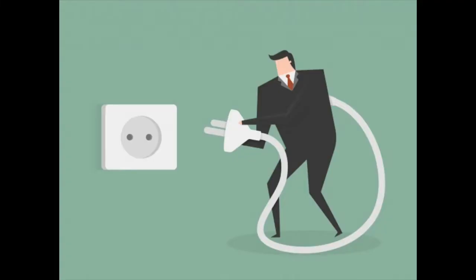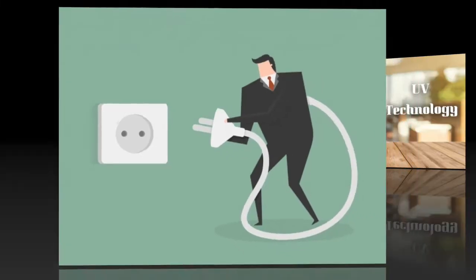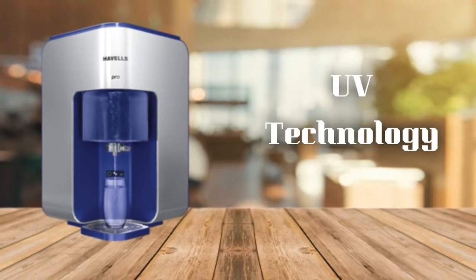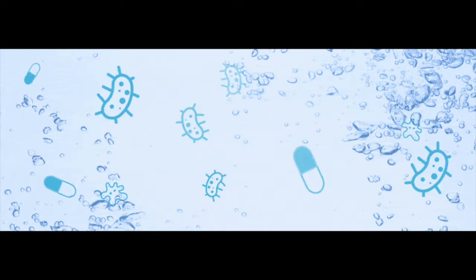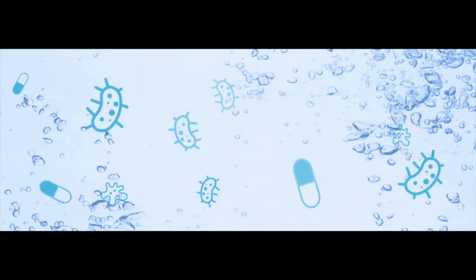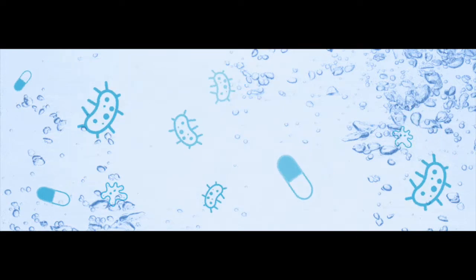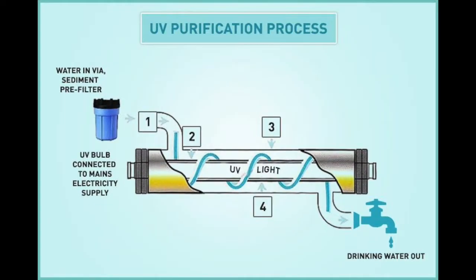This technology requires electricity. Second is UV technology. UV is an acronym for ultraviolet, and it is used to kill the germs, viruses, bacteria, and other tiny microbes. This technology is highly effective to kill the entire microorganism. The only flaw is that the dissolved impurities cannot be removed by this technology.